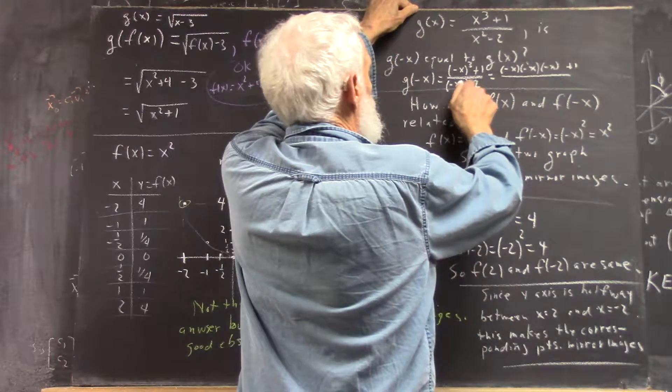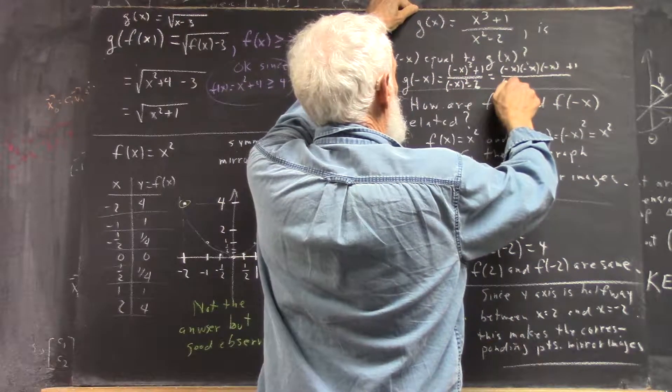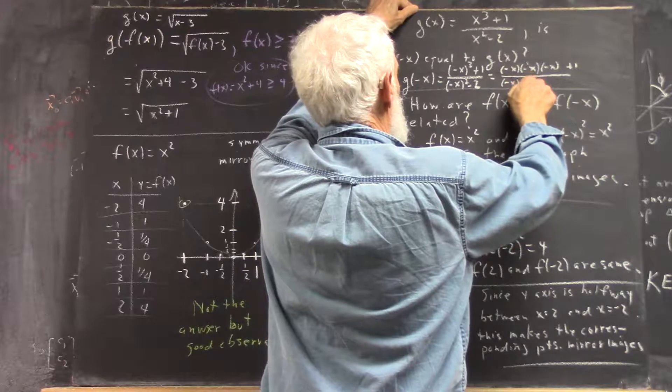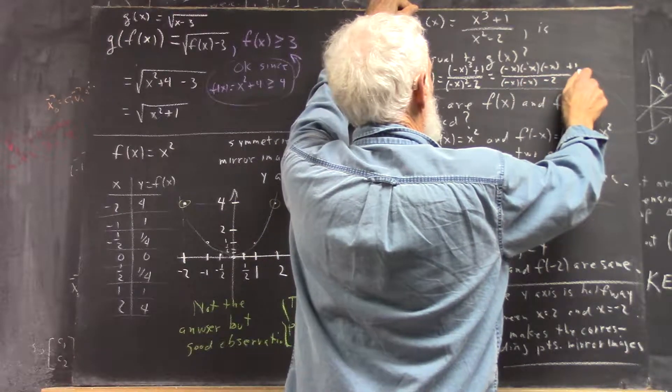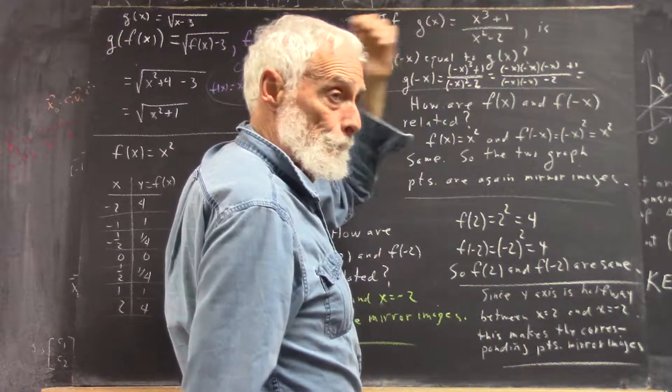And negative x squared means negative x multiplied by negative x, and then that will be minus two.